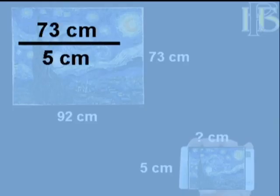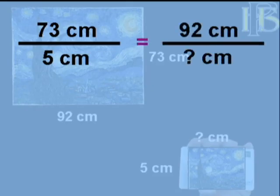And again, I can use proportions. I can use 73 centimeters over 5, relating the height of the original painting to the height of the smaller reduction I want to make. And I can use the width of the large painting, 92 centimeters, and relate that to the width of the small one. In this case, my unknown.